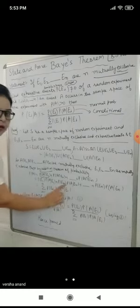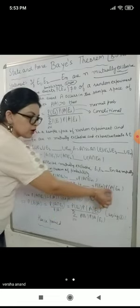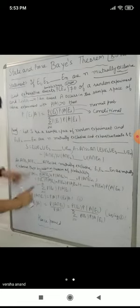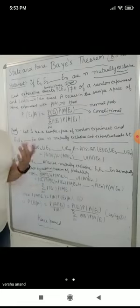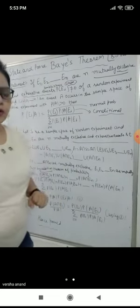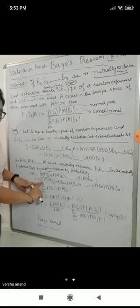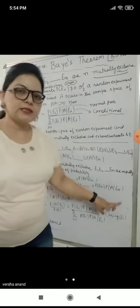Now look at this formula — this is probability of A intersection E1, which equals normal probability of E1 into conditional probability of A over E1, plus probability of E2 into conditional probability of A over E2, up to probability of En into probability of A over En. What do we call E1, E2, En? We use summation: i equals 1 to N, giving probability of Ei into probability of A over Ei.